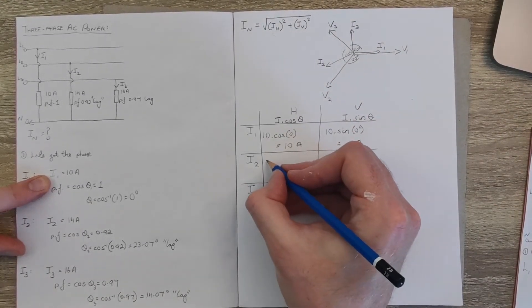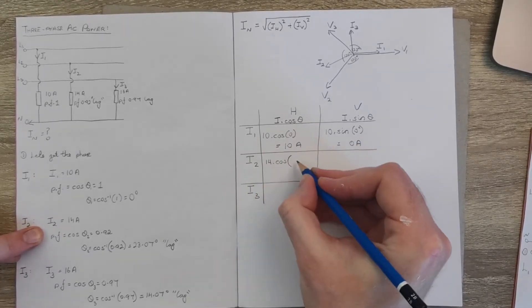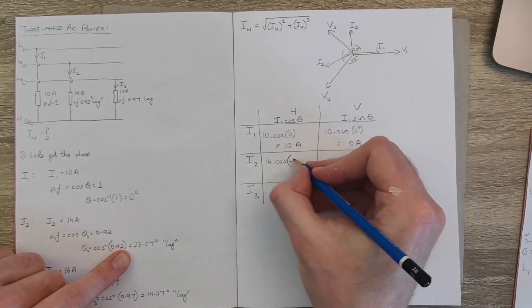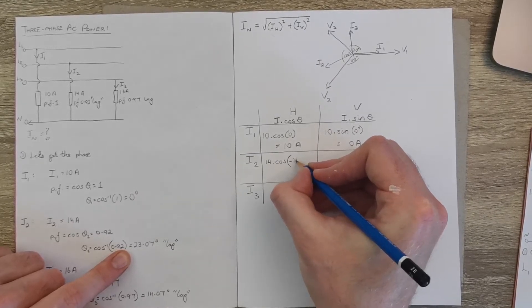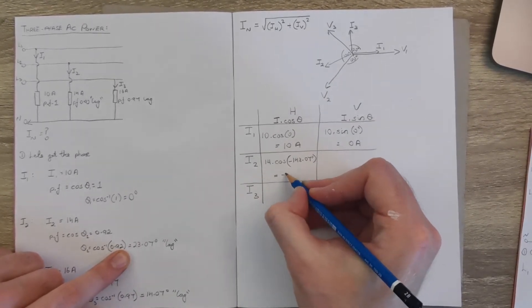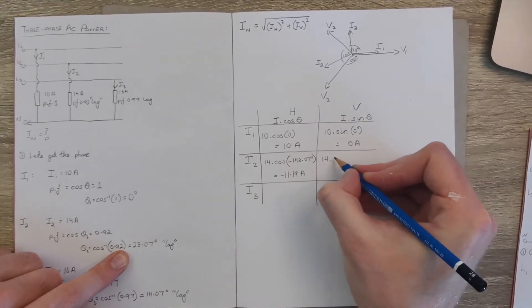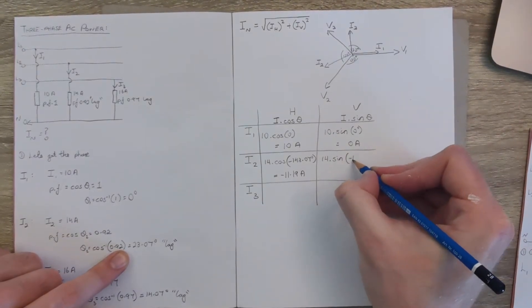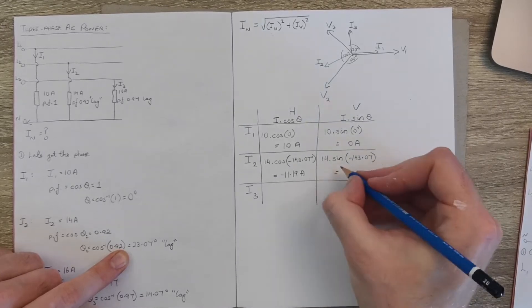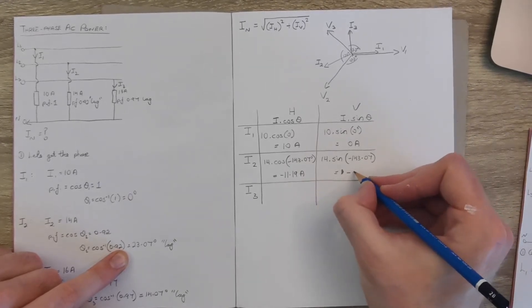So we'll keep going forward. i2 is 14 amps, and the angle we put in here is going to be minus 120 minus 23.07, so it becomes minus 143.07 degrees, and that comes in at minus 11.19 amps. Same then for the vertical component, same angle, that comes in at minus 8.41 amps.